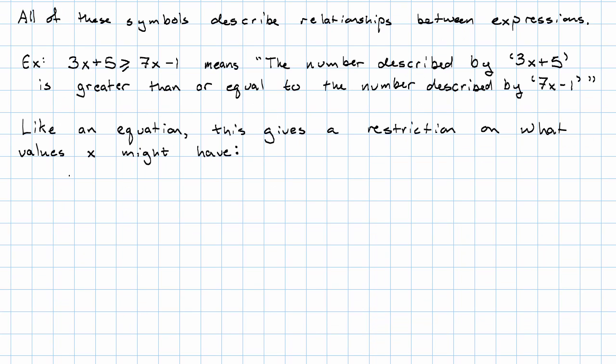For example, if x is 0, well, 3 times 0 plus 5 is 5. 7 times 0 minus 1 is negative 1. And 5 is, in fact, greater than or equal to negative 1. Therefore, x equals 0 makes the inequality true. x equals 0 is a solution to the inequality.